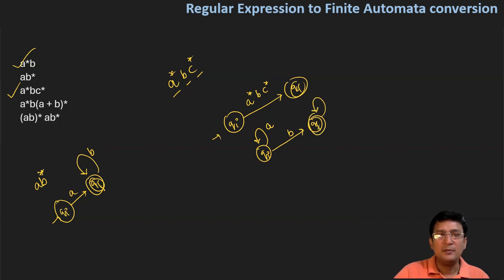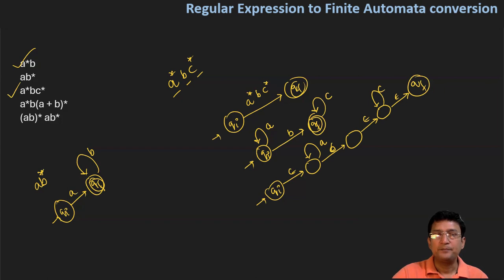Using epsilon transitions: from initial state, epsilon transition to a state with a self-loop. Then B symbol to next state, and from there show c transition to another state with c self-loop, then epsilon transition to final state.